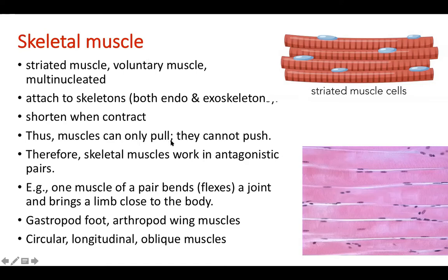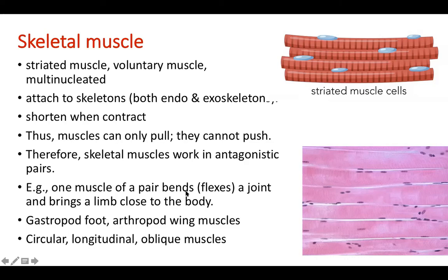Muscles can only pull. When we contract a muscle, it can hold something, but a single muscle won't push. Muscles contract or relax. When we move a limb, we move it in the opposite direction — if one muscle contracts, it will not relax by itself. The opposite pair must relax for the first one to relax. One muscle of a pair flexes a joint and brings a limb close to the body, while the other contracts and takes it back or away from the body. These muscles are therefore antagonistic.